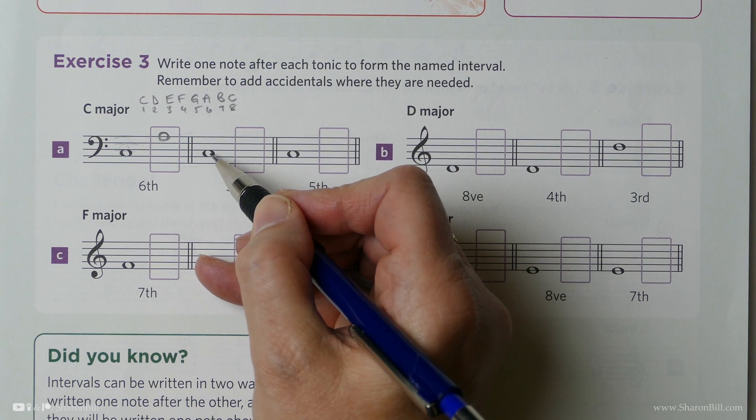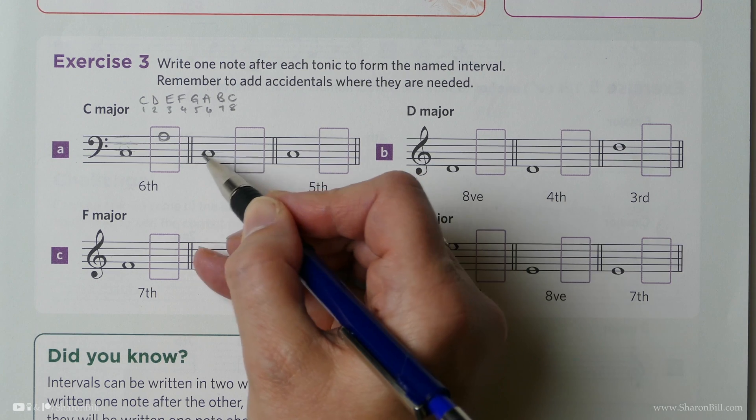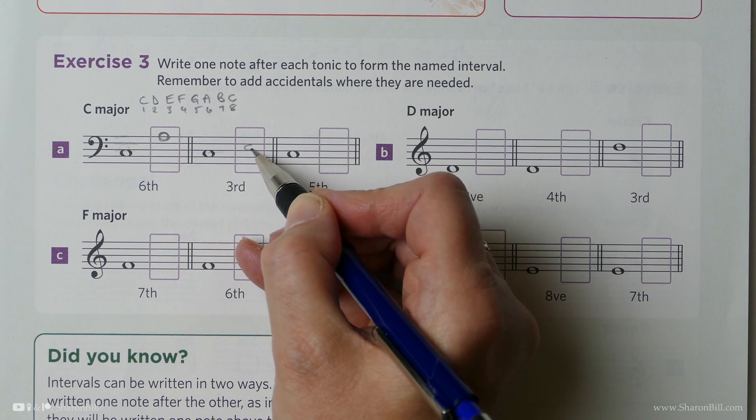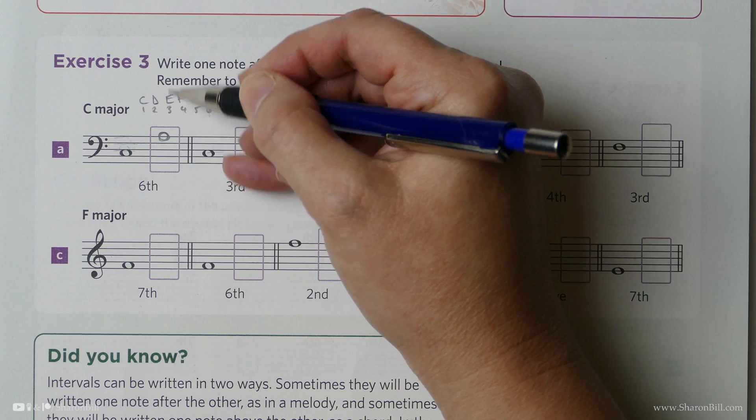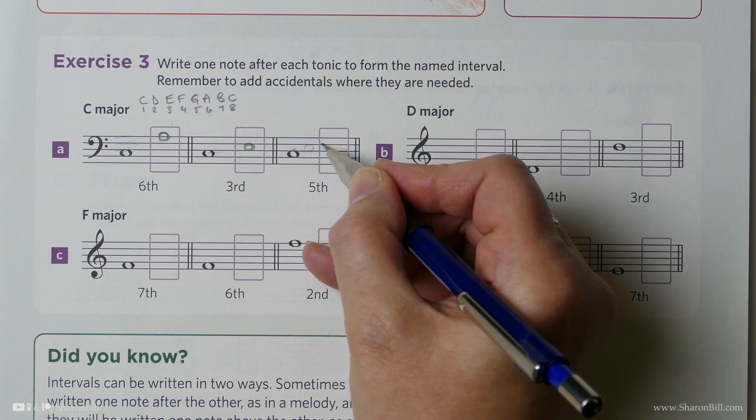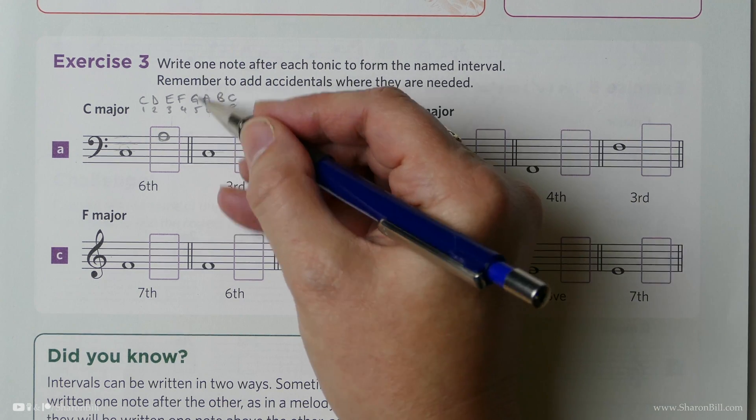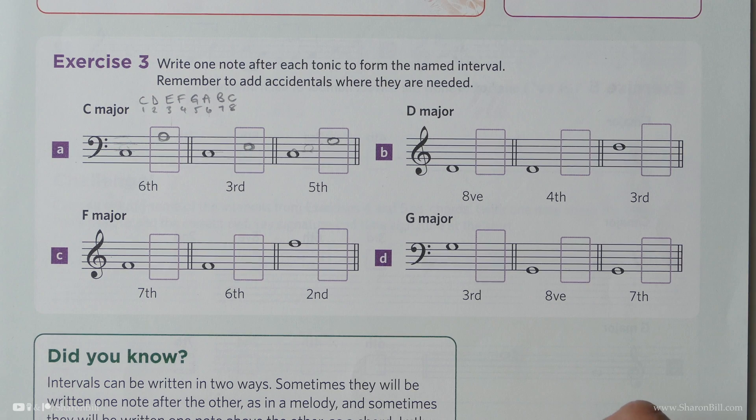However, it does give us a clue that we're in the right place. So here we're asked to write a third. So that's going to be space, line, space. C, D, E. One, two, three. And we can see there's E. And then a fifth. One, two, three, four, five. G is our fifth in C major.